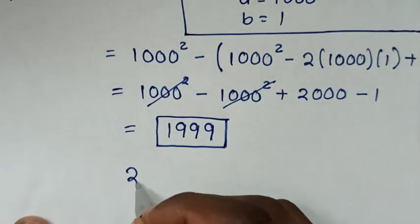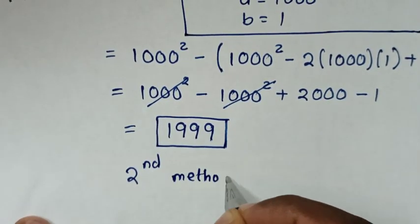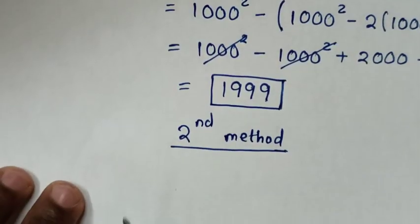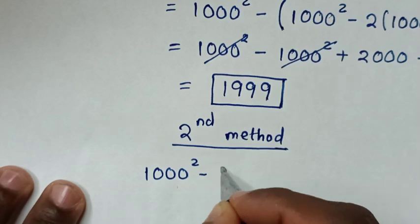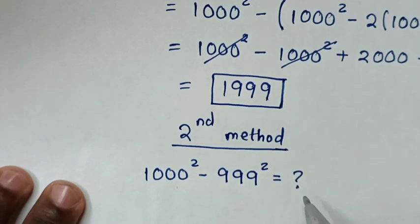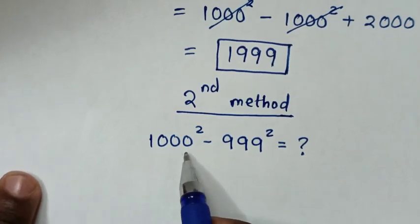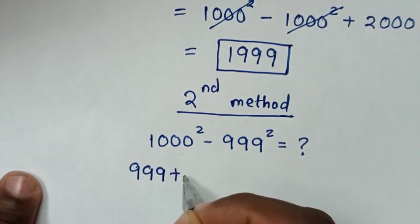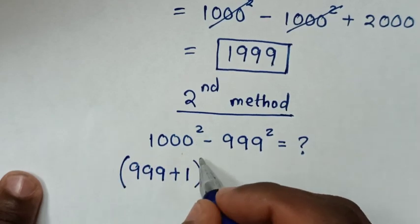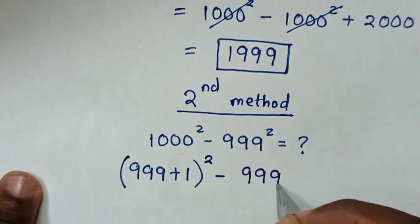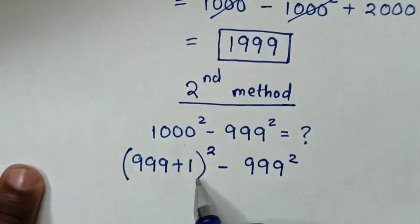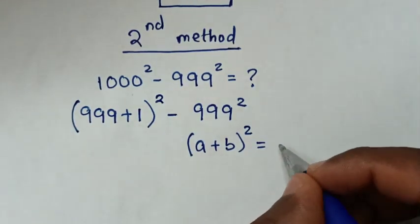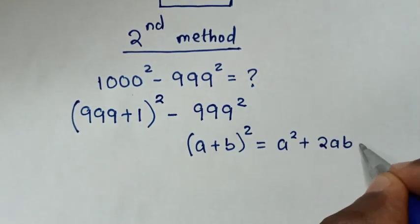Now, to solve again in the second method. From our problem, which is 1000 square minus 999 square. For this 1000 to have a common base with 999, 1000 is the same as bracket 999 plus 1 bracket, because 999 plus 1 is 1000 — then square minus this 999 square. Then in the next step, this part is in the form of A plus B bracket square, which is equal to A square plus 2AB plus B square.